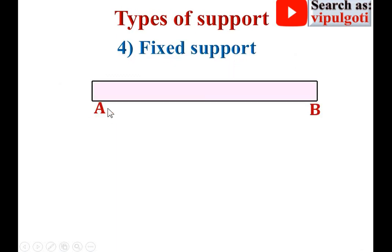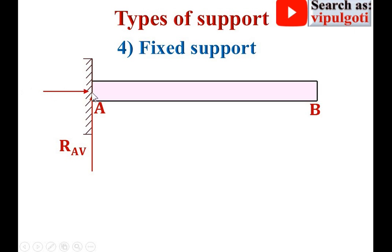Last one — fixed support. This is the beam having ends A and B with fixed support. This is the symbol for the fixed support. At end A, there is a vertical reaction RAV, a horizontal reaction RAH, and also a moment — sometimes known as the bending moment — denoted by capital M.